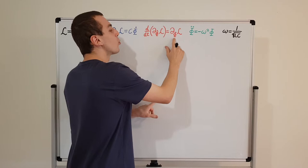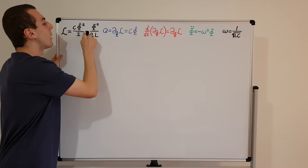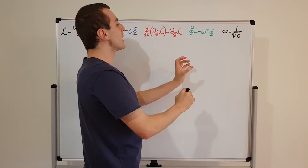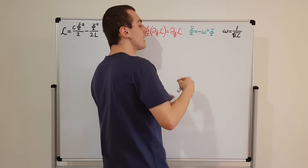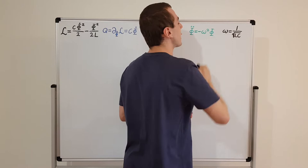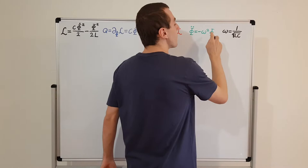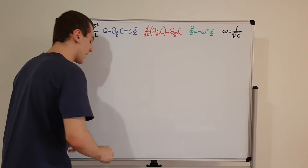On the right-hand side, we take the partial derivative with respect to phi. Using the power rule, that cancels the one half and we're left with minus phi on L. Then we bring that C down into the denominator on the right-hand side, giving us minus 1 on LC. That is reassigned to omega squared, so omega squared equals 1 over LC, and taking the square root gives omega. This is the second-order ordinary differential equation for the simple harmonic oscillator, but using phi — the magnetic flux — instead of a position coordinate.